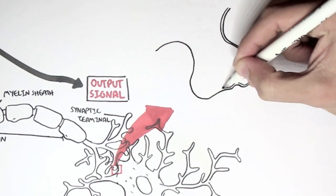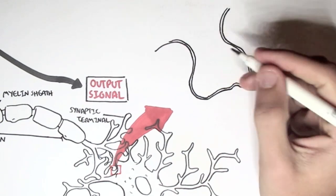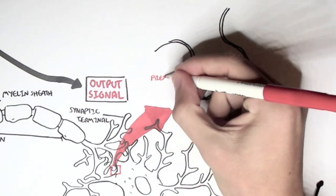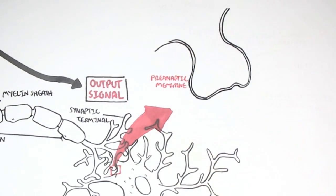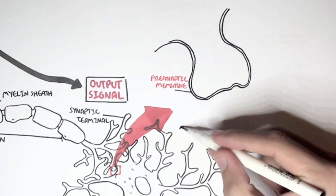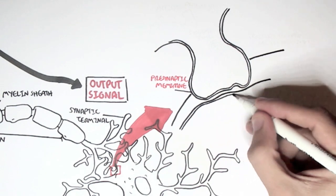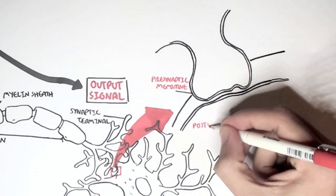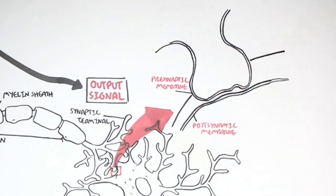Here we have part of the synaptic terminal of the first neuron and its presynaptic membrane. And here is part of the dendrite of the second neuron and its postsynaptic membrane. The gap between the first and second neuron is known as the synaptic cleft.